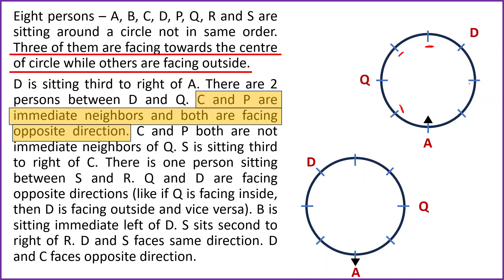Since C and P are immediate neighbors, they also cannot occupy the positions adjacent to Q. So two positions are left for C and P — between A and D. In Case 1, let's suppose C is placed here facing inside the center, so P will be placed here facing outside the center, since they face opposite directions. Similarly in Case 2, C and P cannot be at those positions, so they occupy the two positions between D and A. Let's suppose C faces outside and P faces inside the center.